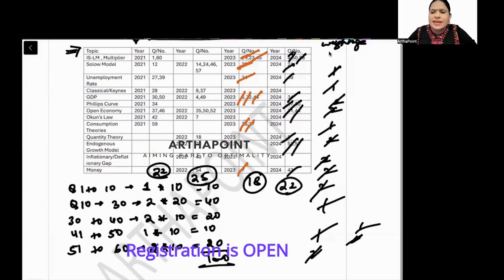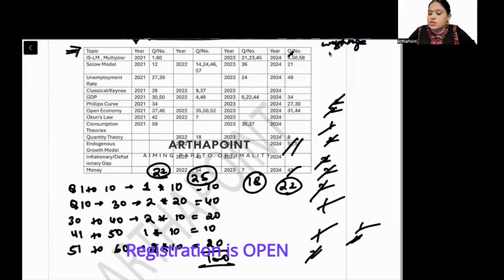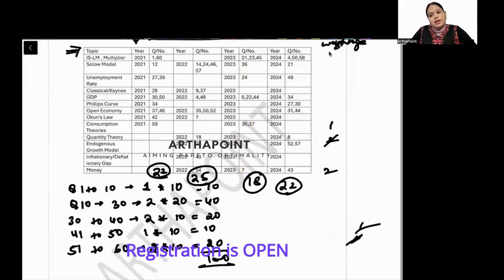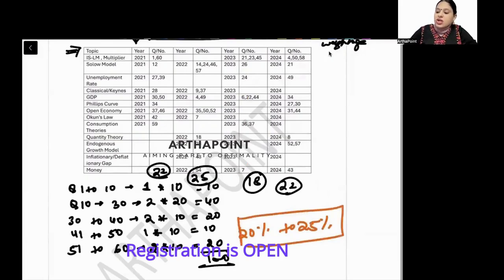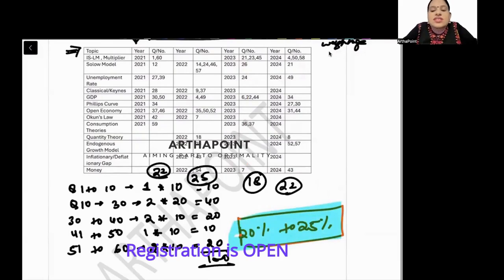So we can say that on average, macroeconomics accounts for about 20 to 25 percent of the IIT JAM Economics paper. The year-wise breakdown was 22, 25, 18, and 22 marks.